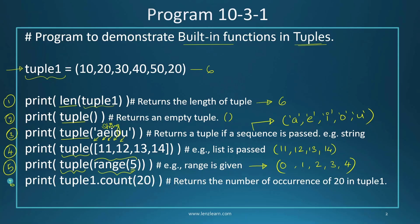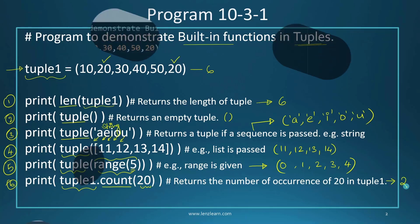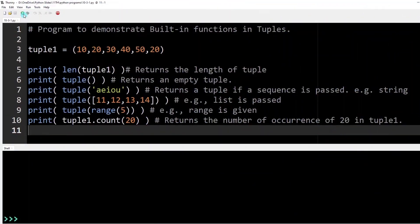In the last print statement, I call the built-in function count() on variable tuple1 to find out how many times the value 20 appears inside the tuple. You can see value 20 appears two times, so the last print statement will print the result as 2.